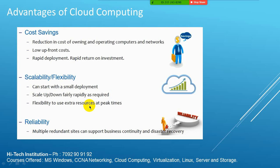The third point is reliability. When we are maintaining any on-premises data center, if any disaster happens, it is very difficult to save our data — nature disasters can come anytime. But when we have our data in cloud, disaster recovery management is very simple. They use a number of technologies to save our data.